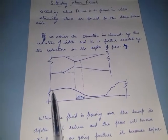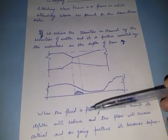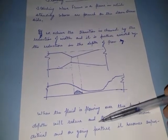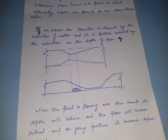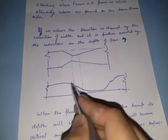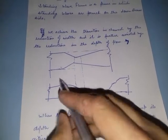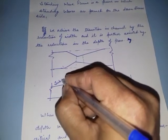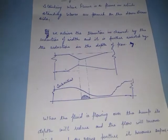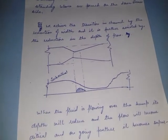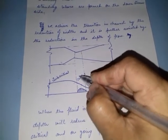When the fluid is flowing over the hump, its depth will reduce and the flow will become critical, and on going further it becomes supercritical. At the point on the hump, the flow is critical. After the hump, the flow we have becomes supercritical flow.